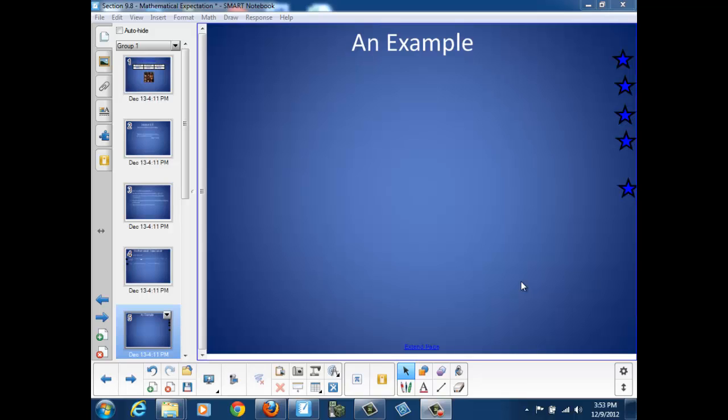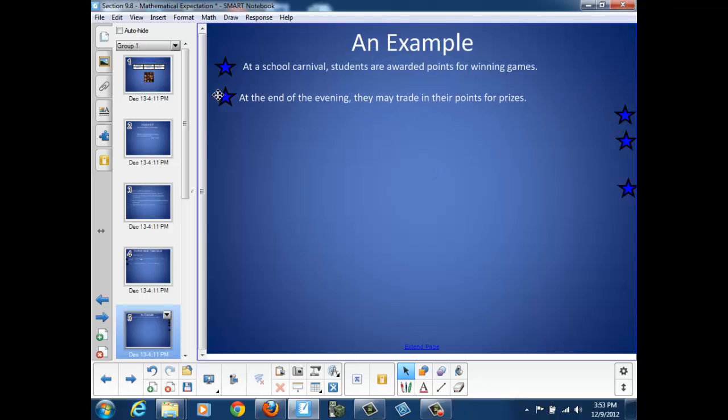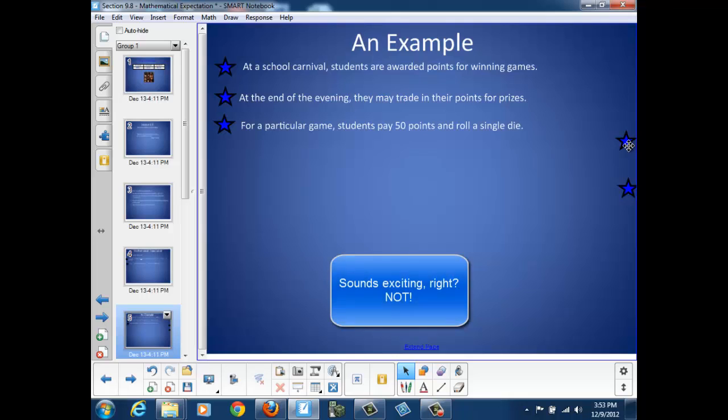Let's look at an example to see how we would calculate a mathematical expectation. At a school carnival, students are awarded points for winning games. At the end of the evening, they may trade in their points for prizes. For a particular game, students pay 50 points and roll a single die.